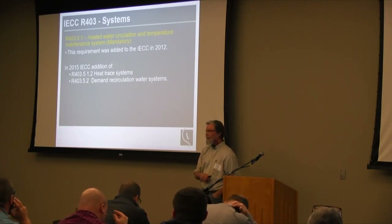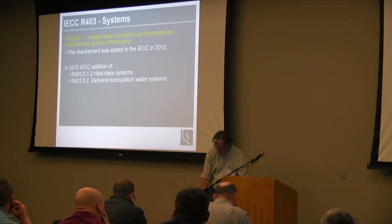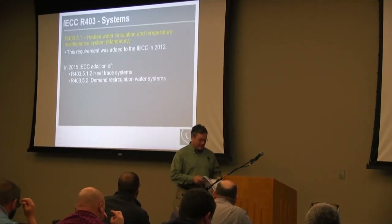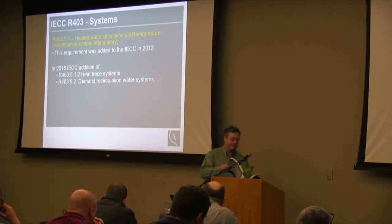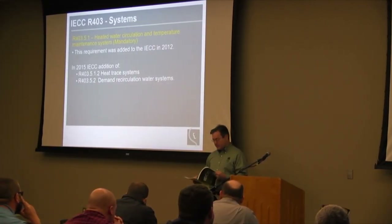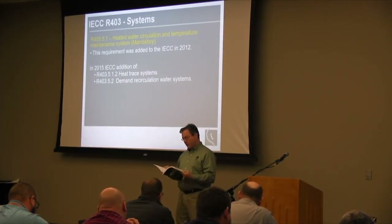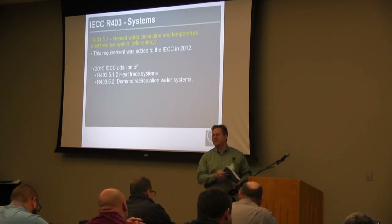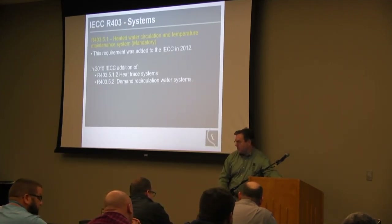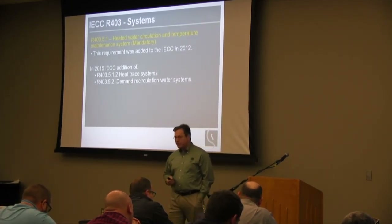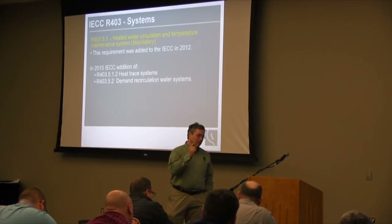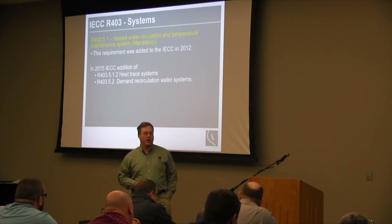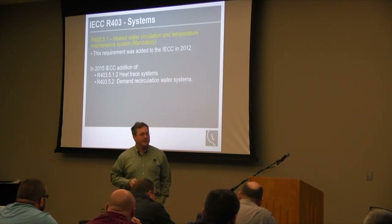Ryan returns to add an important omission from the presentation: table R402.4.1.1 on air barriers and insulation for the building envelope. Nearly every problem encountered with building envelopes is covered in that table — if something was missed in a building envelope, that table is probably where it's addressed.